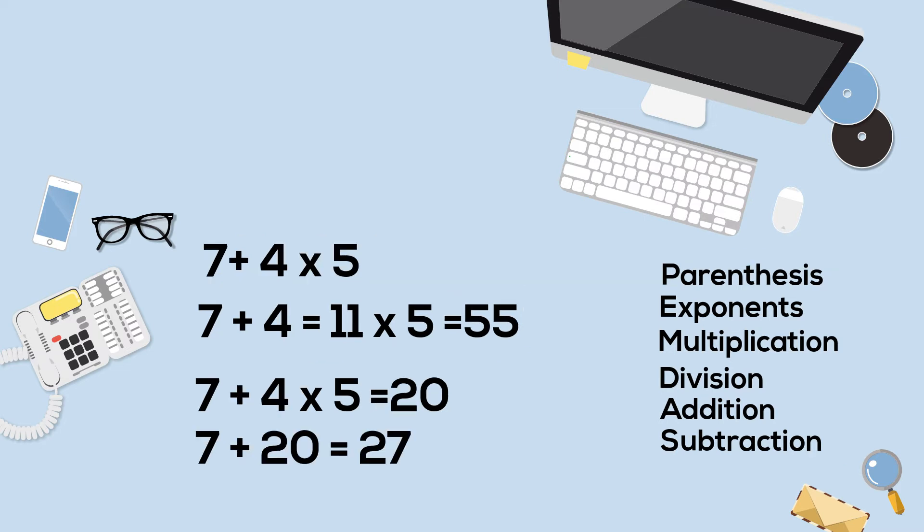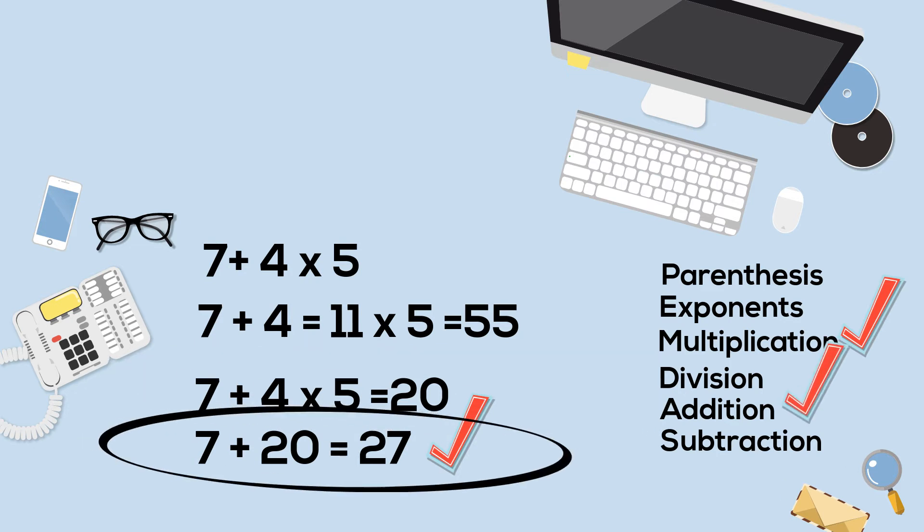The correct answer is 27. If you follow the correct order of operations, you will complete multiplication first. 4 times 5 is 20. Then you will complete addition, so the correct answer is 27.